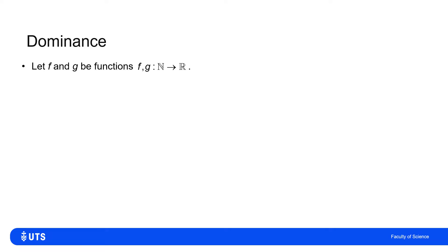Let's consider now having two functions, f and g, and they both map natural numbers to some subset of the real numbers.